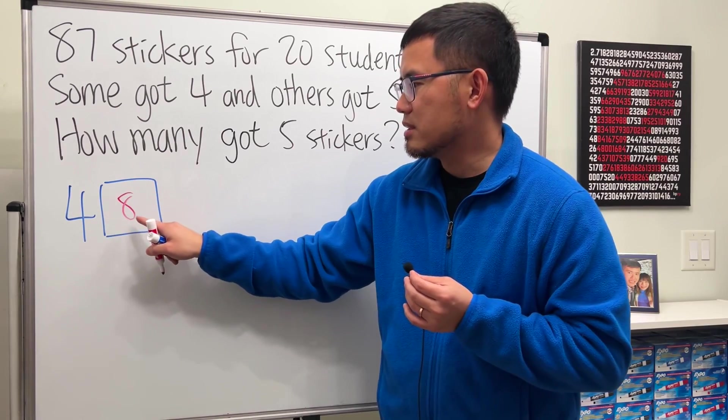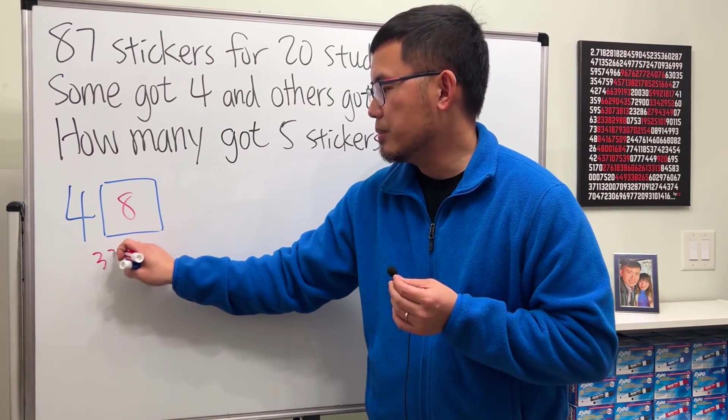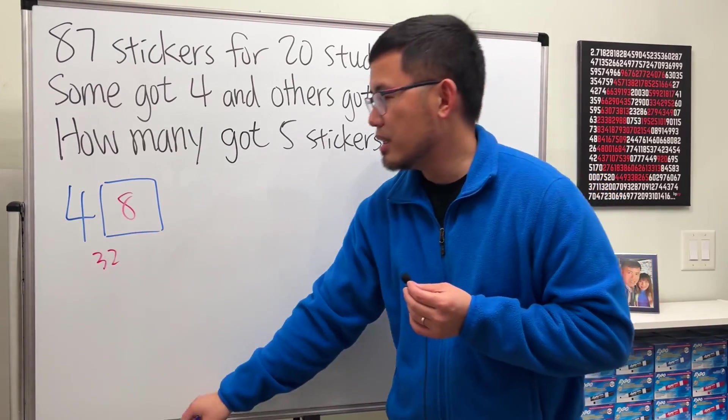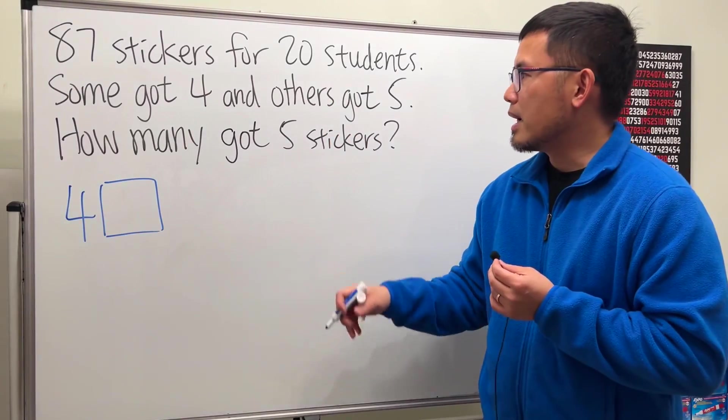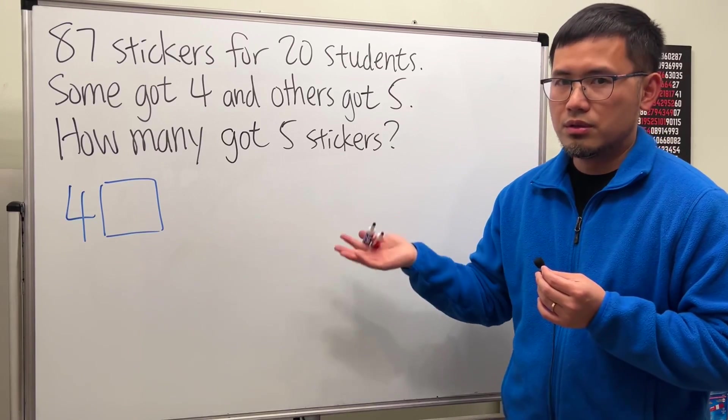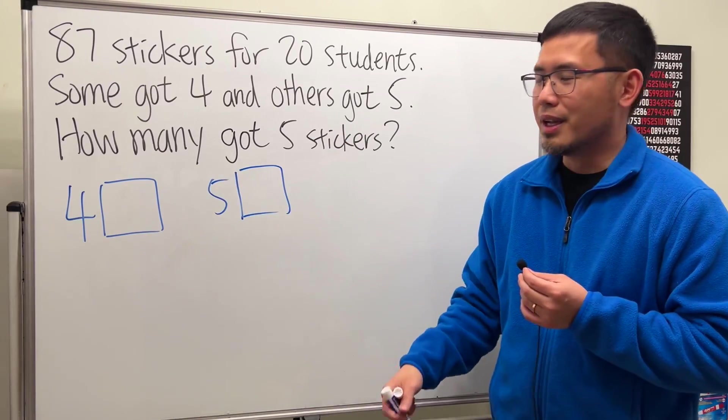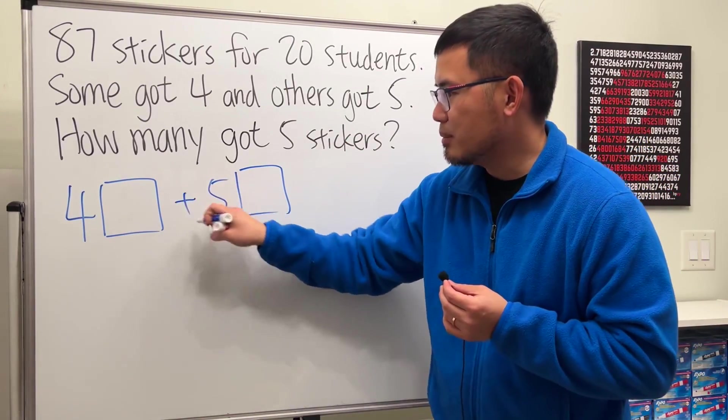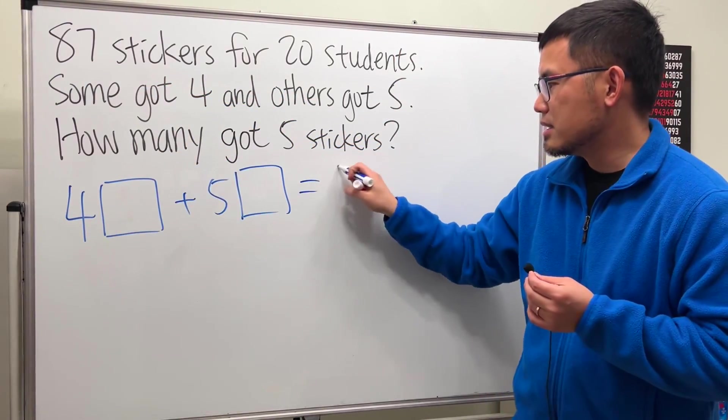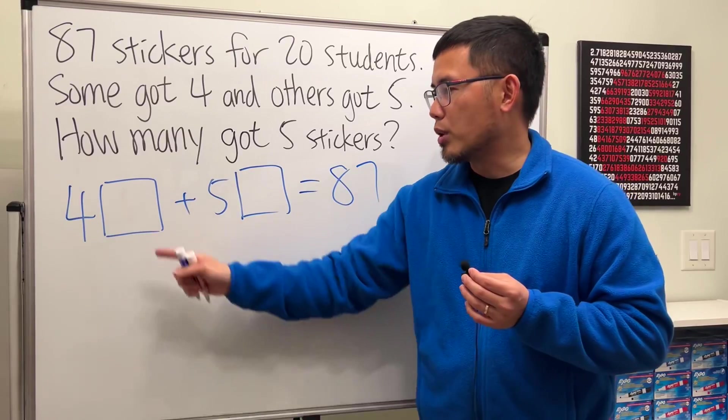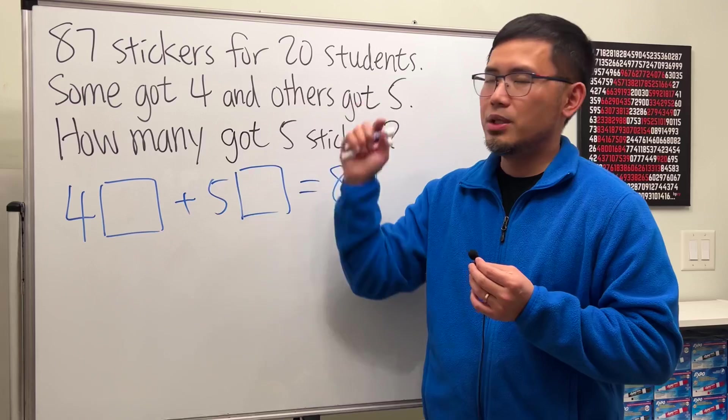For example, right here I can put, let's say, eight. That means eight people got four stickers and I'll just multiply. Four times eight, I will get 32. That means I have used 32 stickers. But I don't know how many people right here, so not yet. But we also have to account for some people got five stickers. So five times something, and then I will have to combine them. So I'll add them all together. I must have a total of 87 stickers.